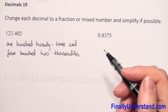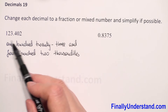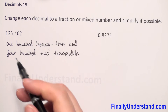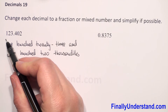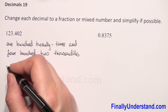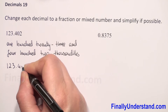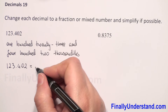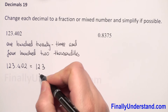Next we have to change this decimal number to a fraction. First, let me copy this example: 123.402. We first have to write our whole number, so we just copy the whole number 123.